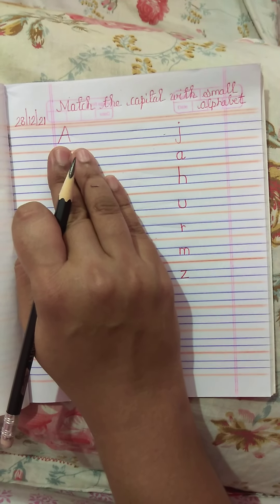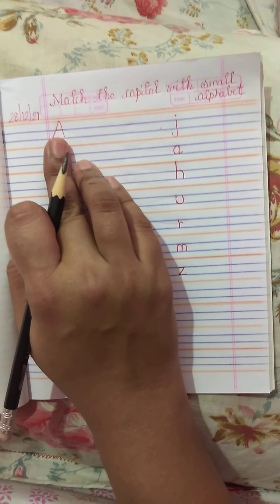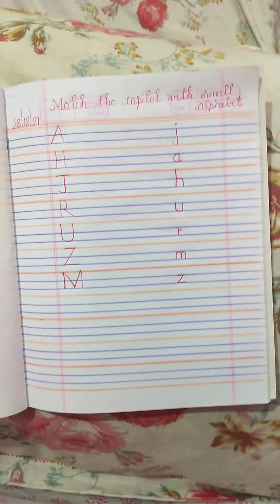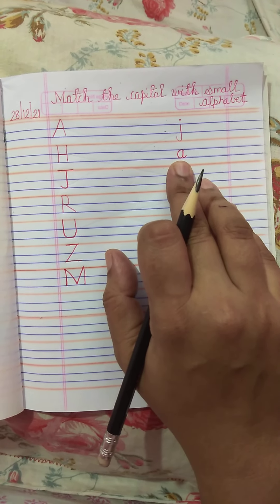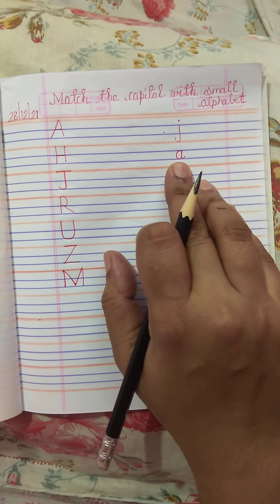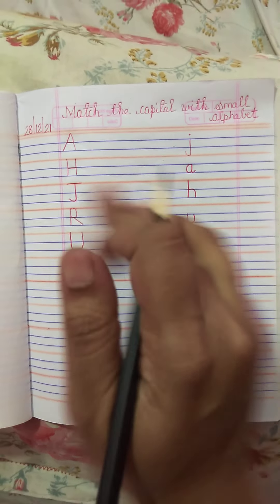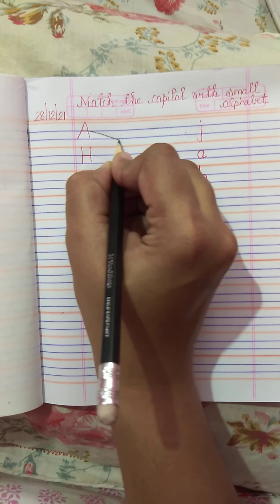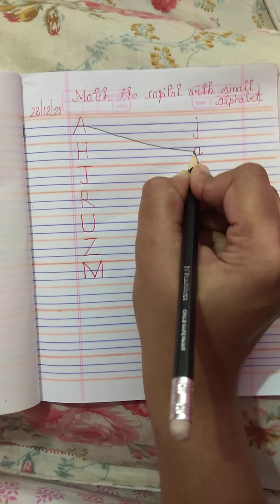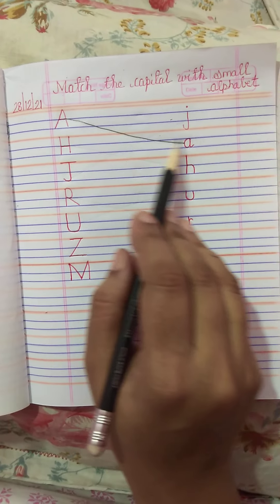So our first letter is capital A. Now children, can you find out where is small a? This is small a? No. This is small a? Yes, there you are — this is small a. So you have to draw a line from capital A to small a like this. So you all have to draw a line from capital A to small a.